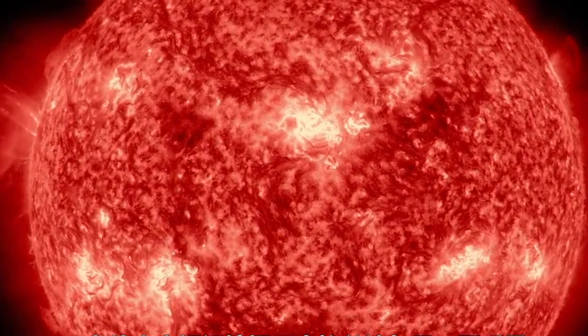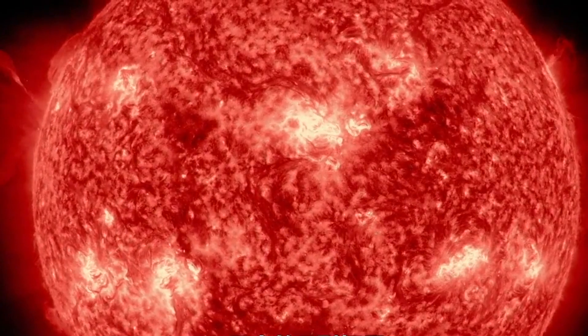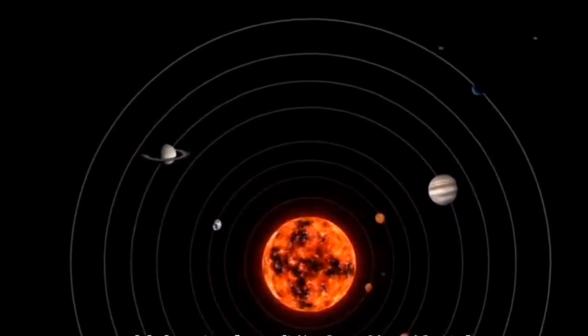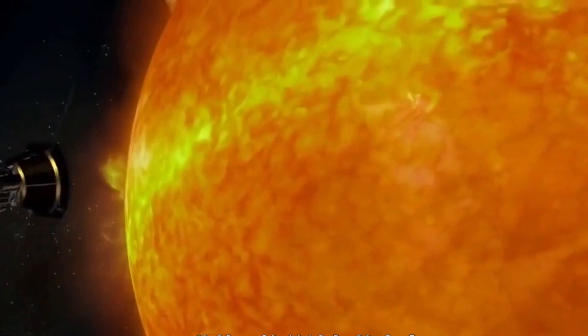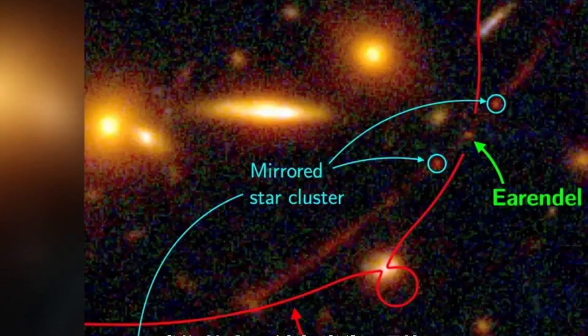Furthermore, Earendel shines with a luminosity that is approximately a million times greater than that of our sun. To put this in context, our sun is classified as a G-type star with a surface temperature of around 10,000 degrees Fahrenheit (5,500 degrees Celsius).